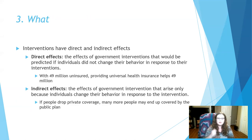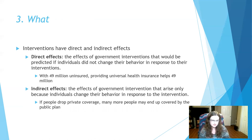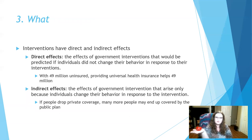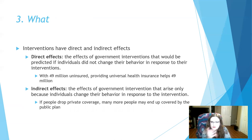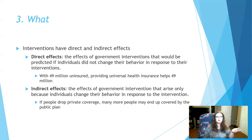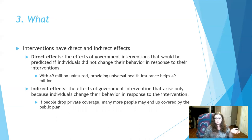Now let's talk about the what — the effects of interventions. Interventions have direct and indirect effects. Direct effects are the effects of government intervention that would be predicted if individuals did not change their behavior. For example, if we have 49 million uninsured people and overnight introduce universal health insurance, we'd predict those 49 million people would now have health insurance — no one had to change their behavior. That is a direct effect.